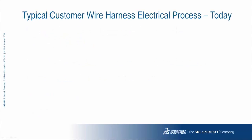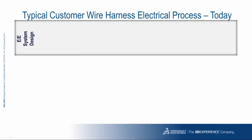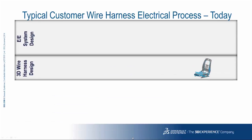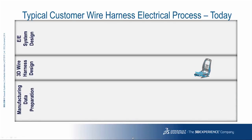A typical customer wire harness electrical process today consists of roughly three different steps: the electrical and electronic system design, the 3D wire harness design, and the manufacturing data preparation. For the creation of the 2D system design, in many cases schematics and diagrams are used. The system may include lots of different software; however, they don't include the 3D harness design.